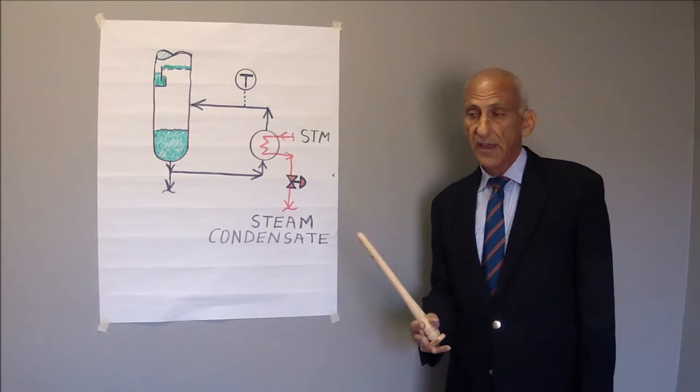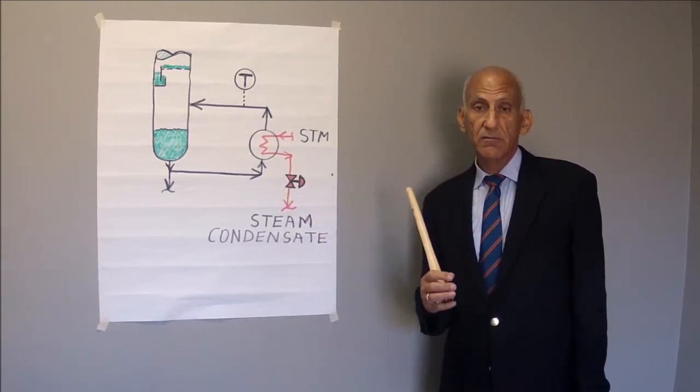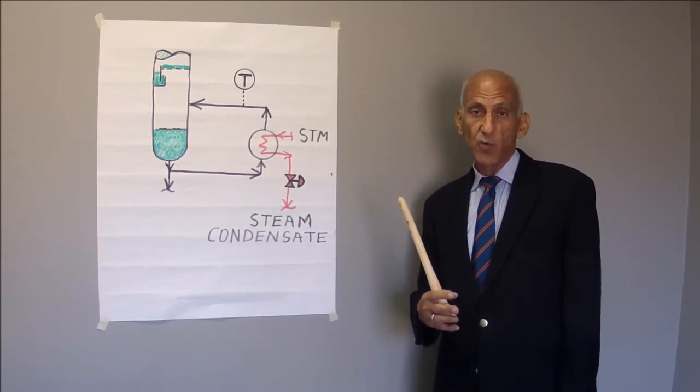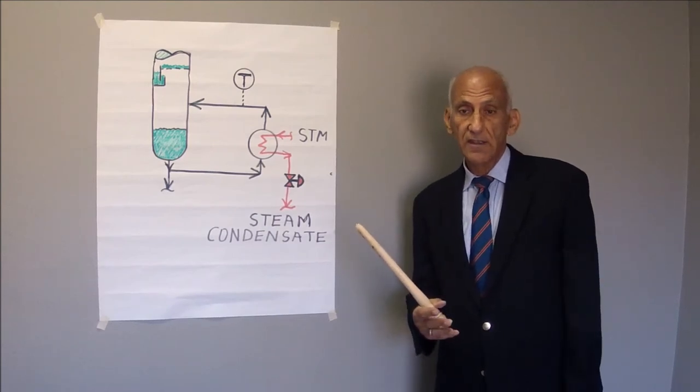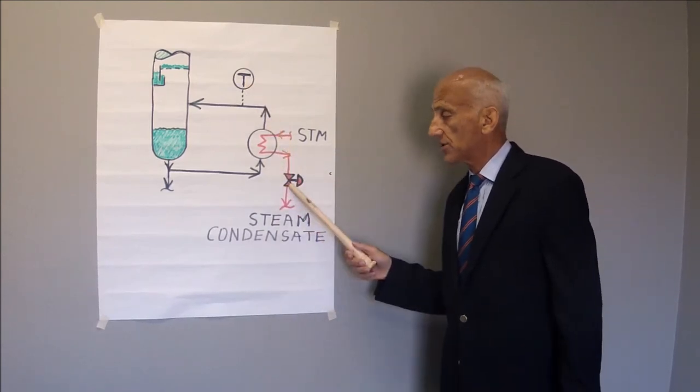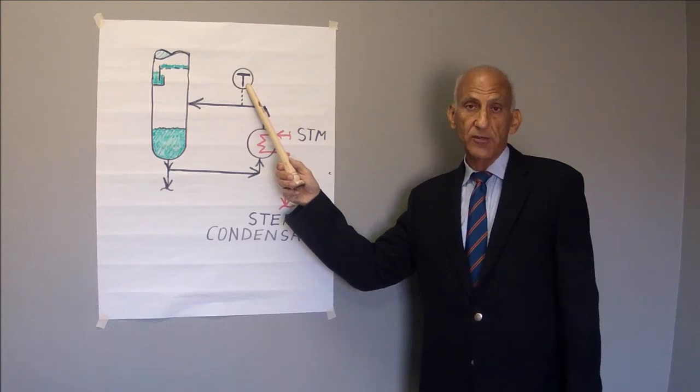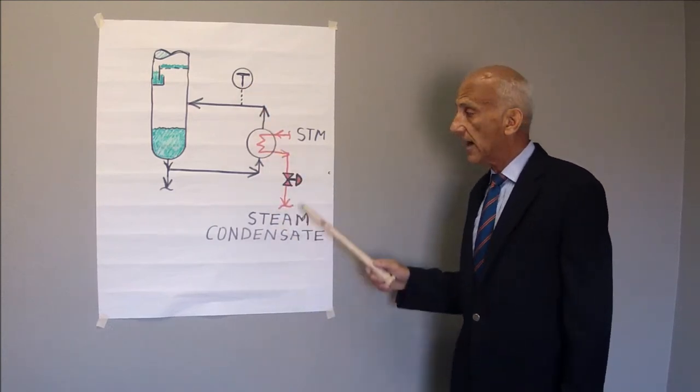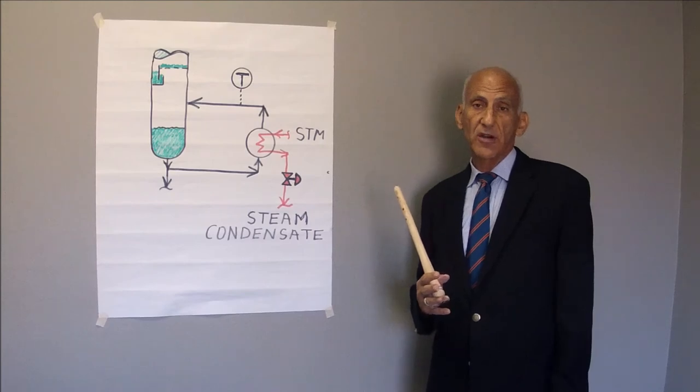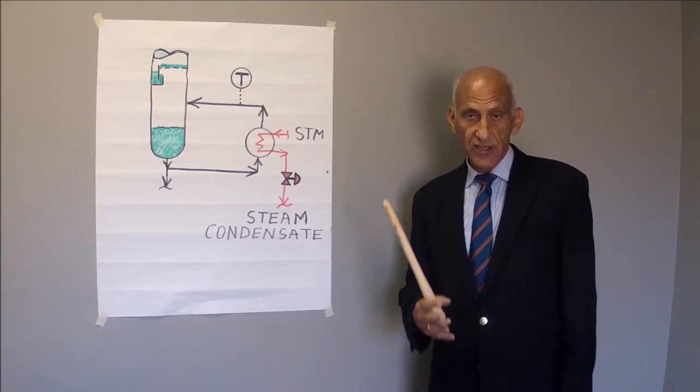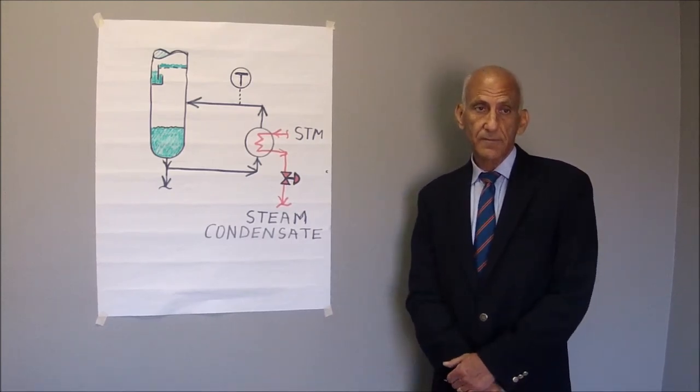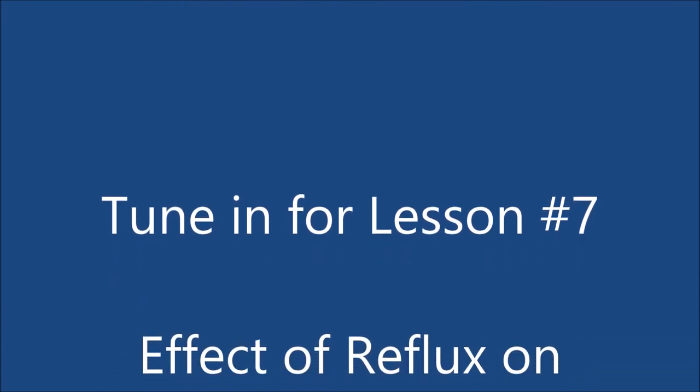On the other hand, if you close the valve too much and promote condensate backup and sub-cool the condensate, closing this valve will also cause this temperature to drop. So the operator adjusts the condensate drain valve to maximize the reboiler shell side outlet temperature.